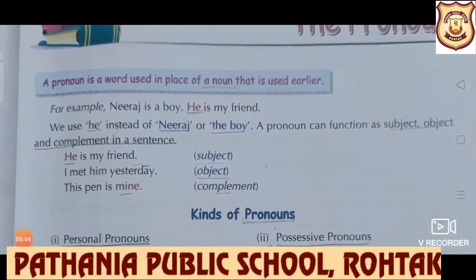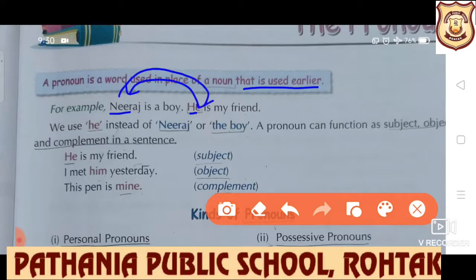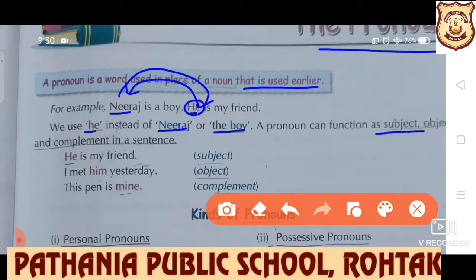A pronoun is a word used in place of a noun that is used earlier. For example, 'Neeraj is a boy. He is my friend.' Neeraj is already mentioned, and 'he' has been used in the place of Neeraj. So obviously, 'he' is a pronoun. We use 'he' instead of Neeraj or 'the boy'. A pronoun can function as a subject, object, and complement in a sentence. 'He is my friend' — here 'he' is in the subjective part, the doer of the action, so it is called a subject.